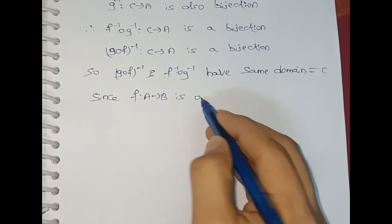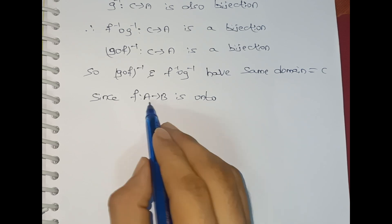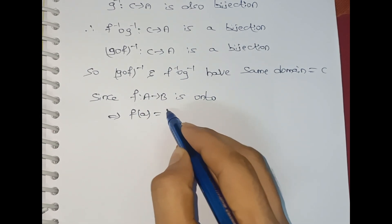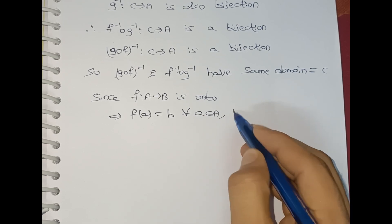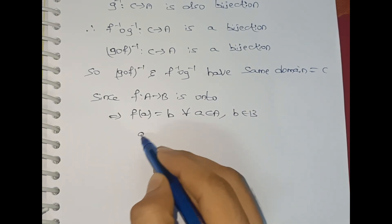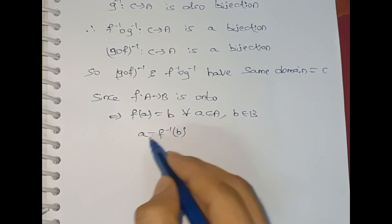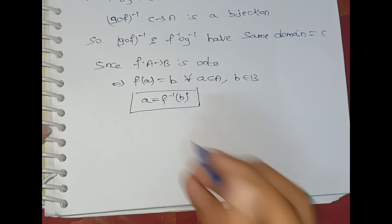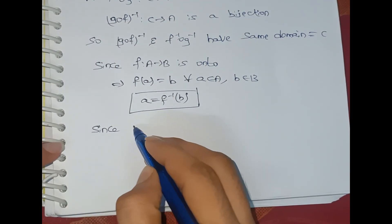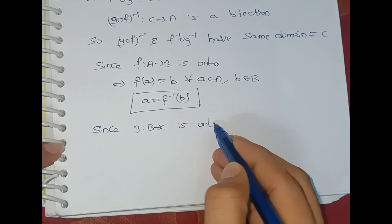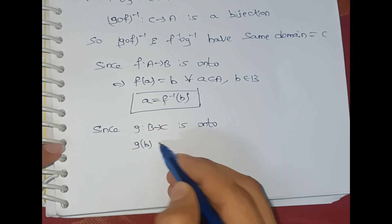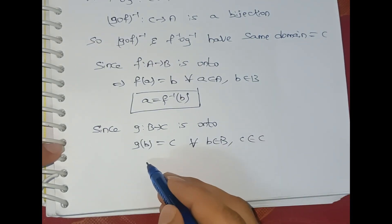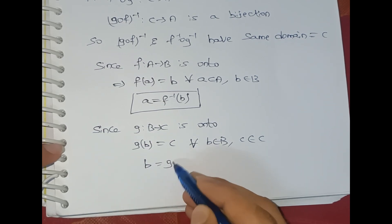Since f maps A to B is onto, that implies f(a) = b for all small a belonging to capital A and small b belonging to capital B. So f⁻¹(b) = a. Similarly, since g maps B to C is onto, g(b) = c for all small b belonging to B and small c belonging to C. So g⁻¹(c) = b.